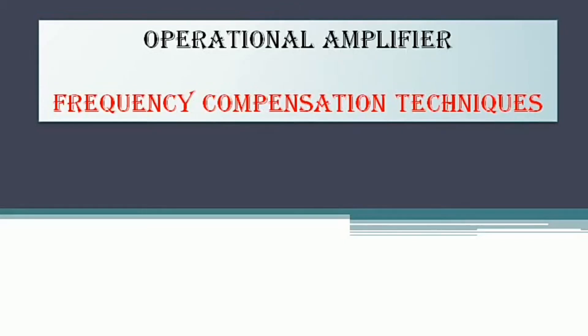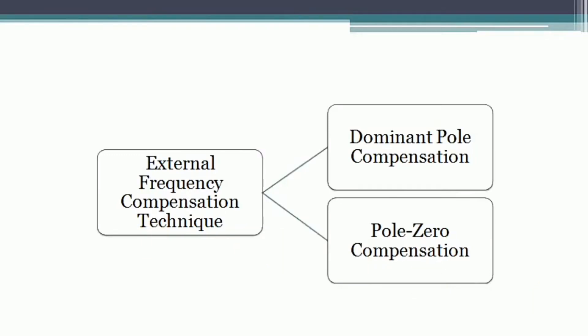Hello everyone. In the previous videos we have seen why we have to use a frequency compensation technique for the open loop of an operational amplifier circuit, and what are the methods involved in order to get the stability of the open loop op-amp circuit. In brief, the compensation techniques are of two types: one is internal compensation and the second one is external compensation. Today's video will cover the drawback of the dominant pole compensation technique and how that drawback is overcome in the pole-zero compensation technique.